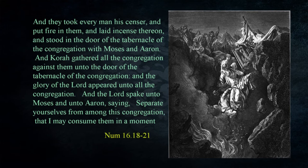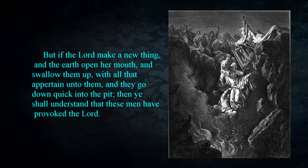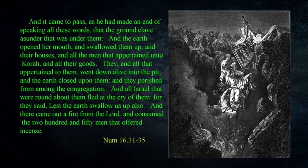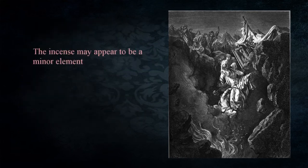God then commanded Moses and the people to separate themselves from the rebels. Moses stated that a sign would be given to prove that God had sent him by doing something that hadn't been done before. 'And it came to pass, as he made an end of speaking all these words, that the ground clave asunder that was under them, and the earth opened her mouth and swallowed them up — and their houses and all the men that appertained unto Korah and all their goods. They and all that appertained to them went down alive into the pit, and the earth closed upon them, and they perished from among the congregation. And all Israel that were round about them fled at the cry of them, for they said, lest the earth swallow us up also. And there came out fire from the Lord and consumed the 250 men that offered incense' — Numbers 16:31-35.